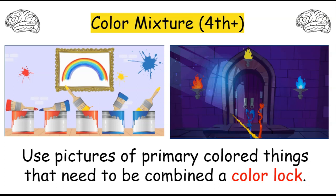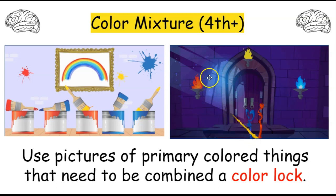This is a color mixture puzzle, appropriate for fourth grade and up. It's a mental puzzle working for both physical and digital breakouts. You use pictures of primary colored things that are combined to get a color lock answer. In this example, paint buckets and paintbrushes are combined left to right: red on red stays red; blue brush with red bucket gives purple; yellow brush with red bucket gives orange; two blues stays blue; yellow and blue gives green. Another example uses a video where wands shoot different colored sparks that mix with fire colors a certain number of times, requiring you to watch the video to get the correct combinations.